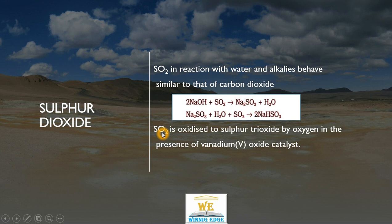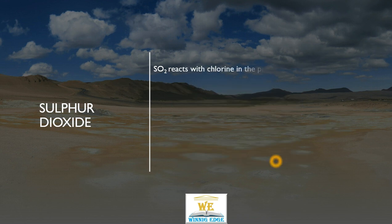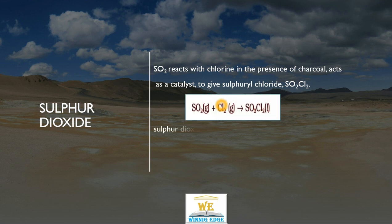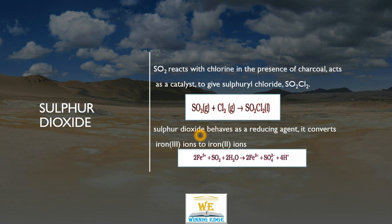Further, if we heat Sulphur dioxide in ample supply of Oxygen under catalytic conditions using Vanadium catalyst V2O5, we get Sulphur trioxide. This is also used for the preparation of Sulphuric acid. Sulphur dioxide reacts with chlorine gas in the presence of charcoal to give us Sulphuryl Chloride. Sulphuryl Chloride is used for preparing Phosphorus Pentachloride. Sulphur dioxide also acts as a reducing agent — it converts ferric to ferrous and itself undergoes oxidation to give sulphate.